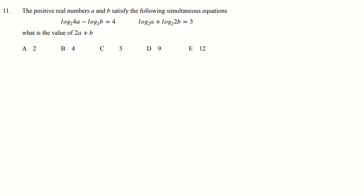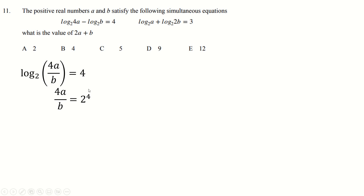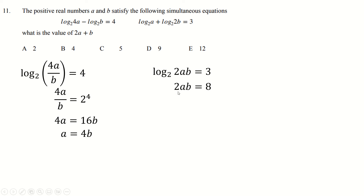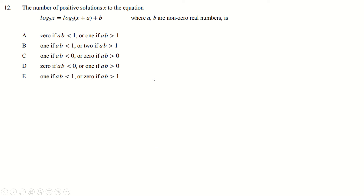Only a few questions to go. Another simultaneous equation here, so let's combine these logs together — sensible — and then 2 to the power 4 is 16. Cross multiply the b over as well, divide by 4, and you end up with this. Then the next one: combine the logs together, 2 to the power 3 is 8. Shove this result for a into here, divide by 8. b is clearly plus or minus 1, but it says it's positive so b is 1, which means a is 4, and then the value of 2a plus b is clearly 9.